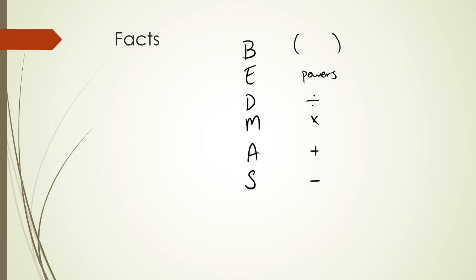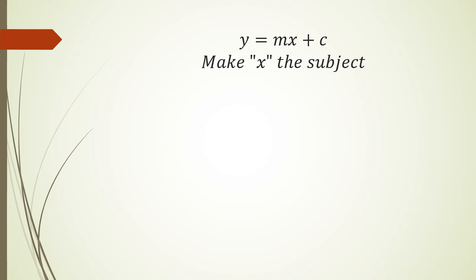Here's my first example: y = mx + c — make x the subject. When they say make x the subject, they want you to write the equation so that x is by itself and everything else is on the other side. Remember, if it's equals, it can be on either side.